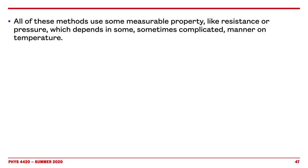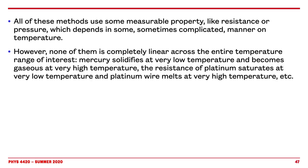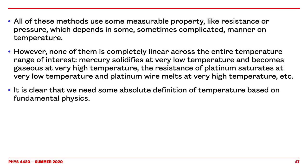We can use measurable properties, but we still don't know exactly how to define temperature in a fundamental way. All those empirical methods are also limited by the physical properties of the substance — for example, mercury solidifies at low temperatures and can't be used there. These empirical properties were very useful for the development of thermodynamics before there was a more fundamental understanding. There must be an absolute definition of temperature, and that's what we will develop.